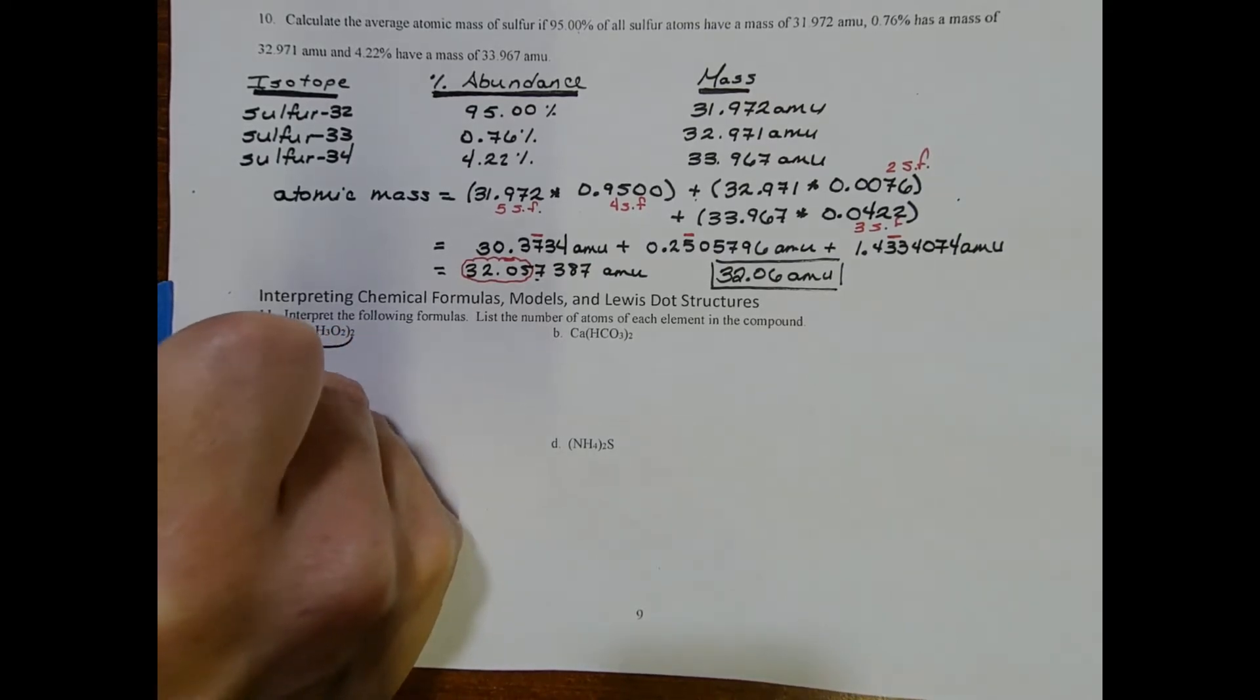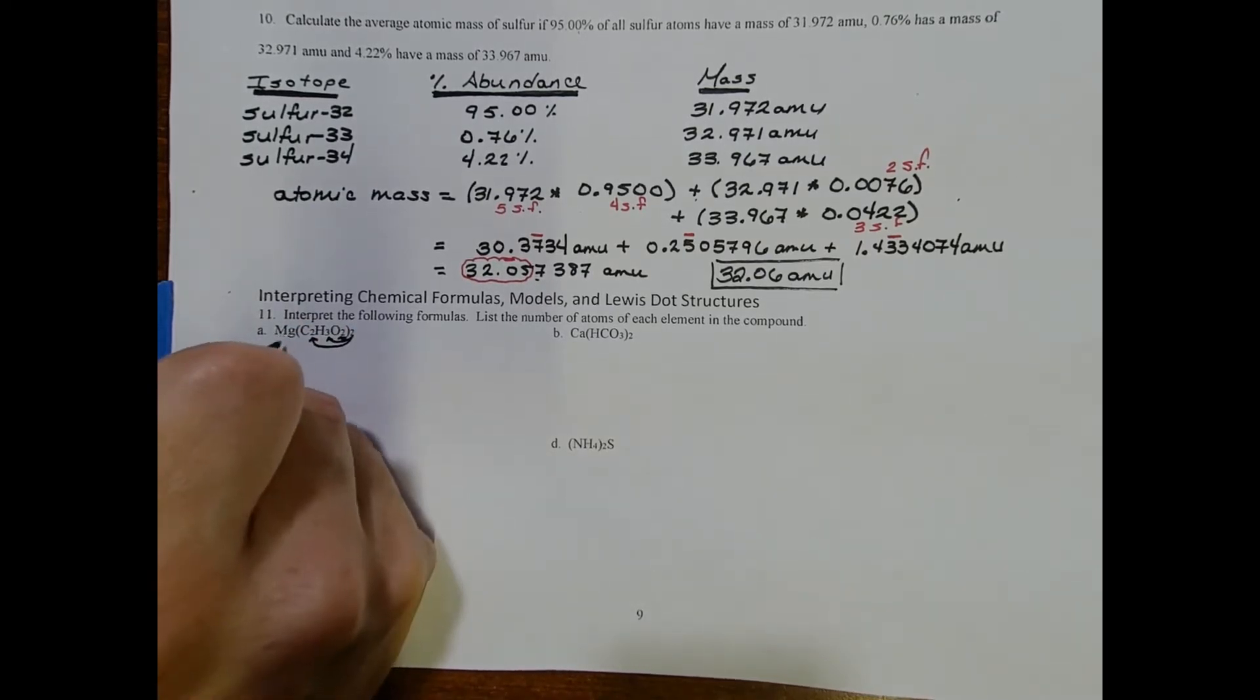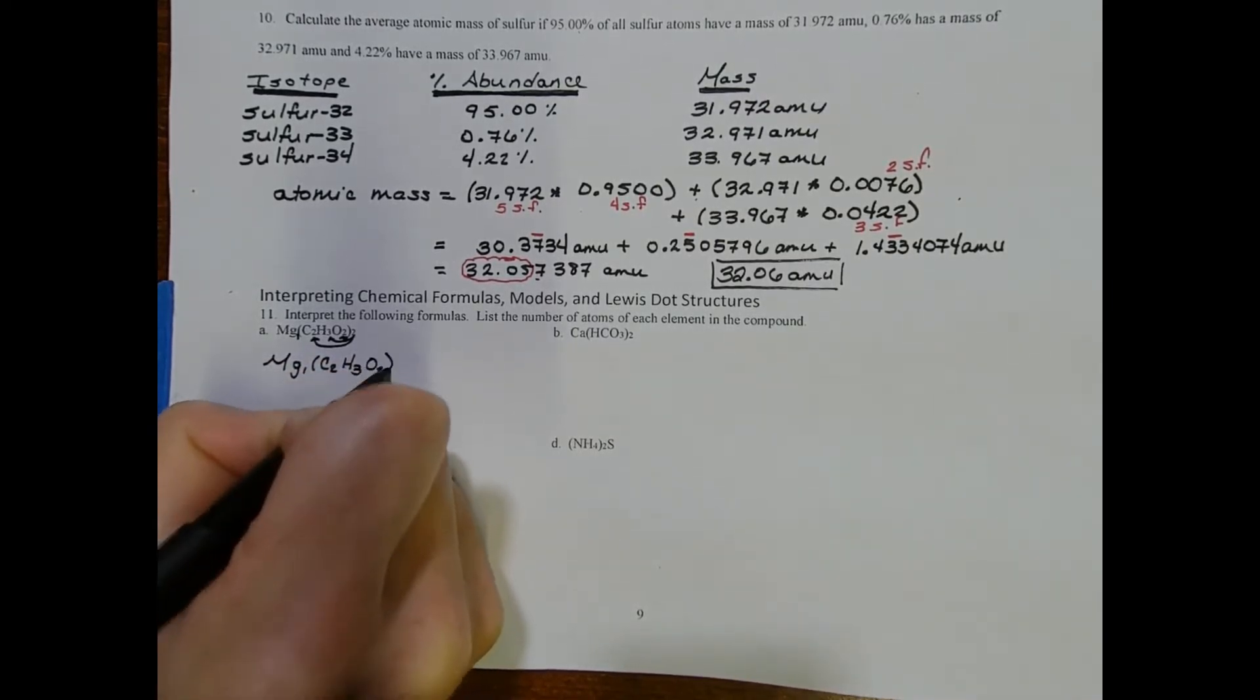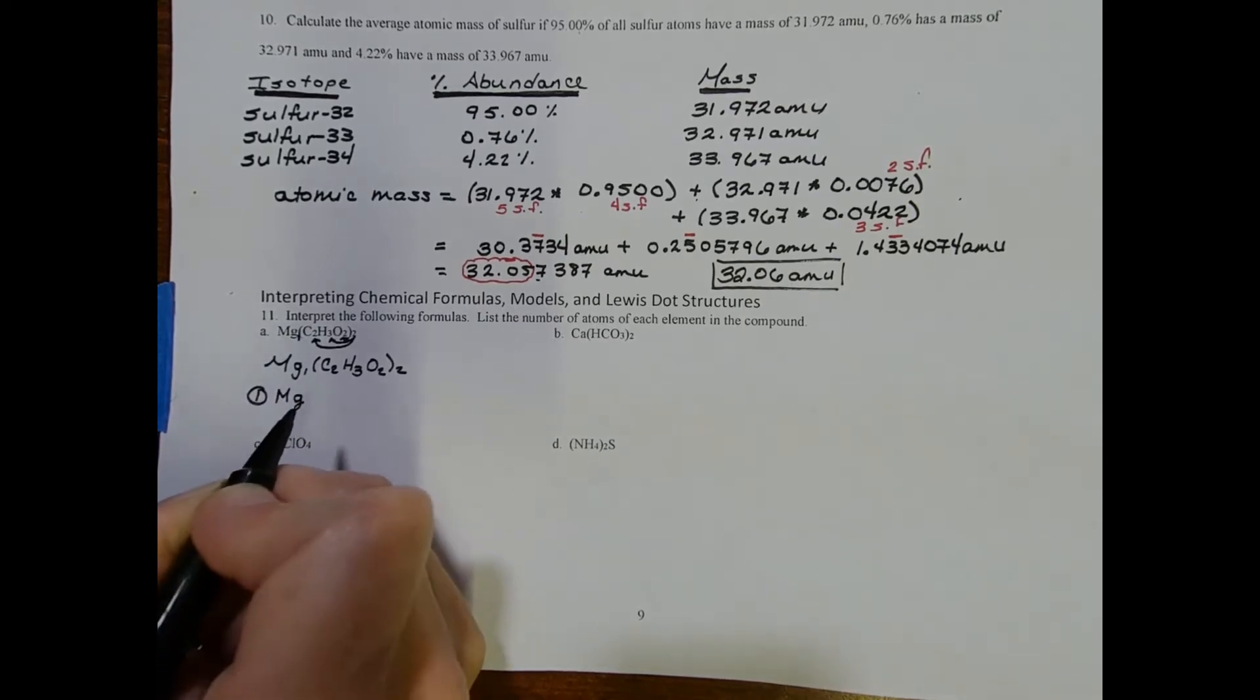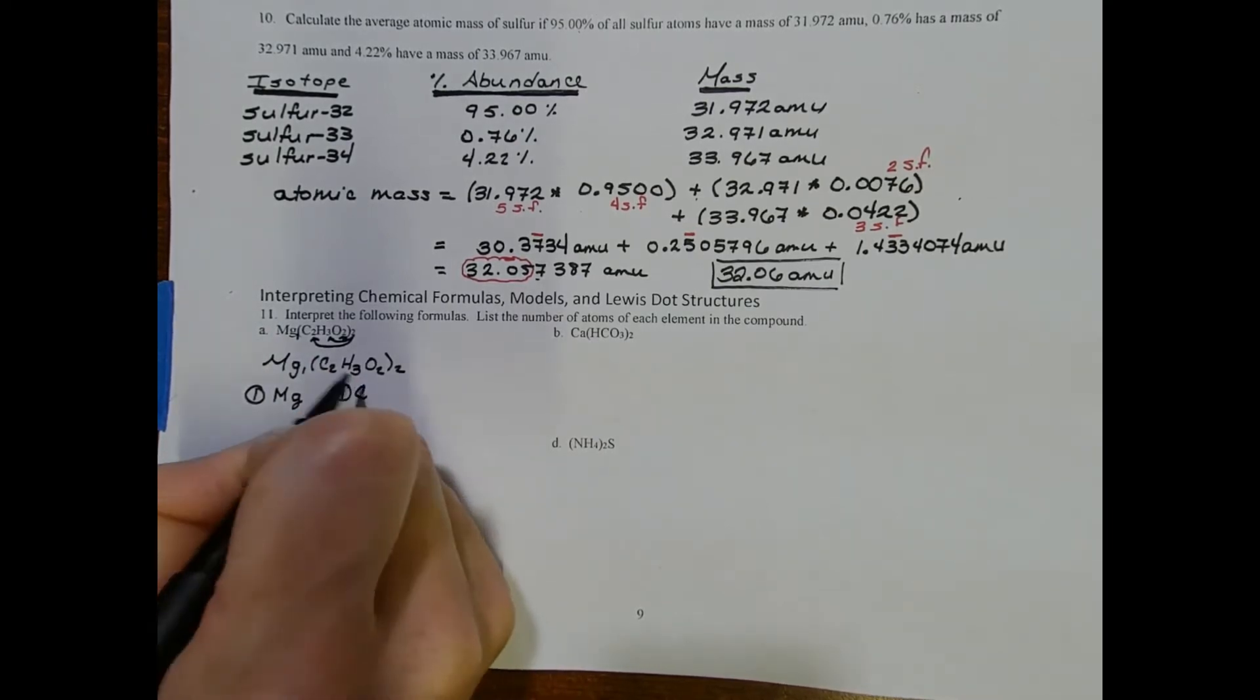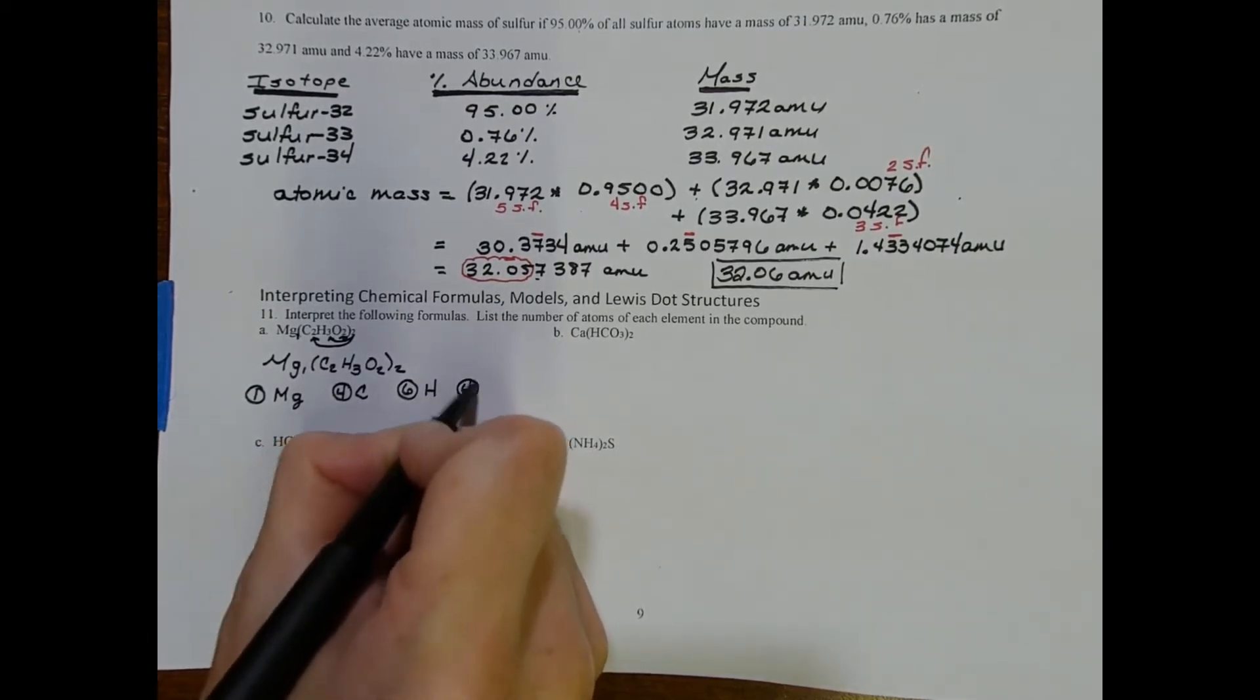So I'm going to distribute this to the carbon, to the hydrogen, and to the oxygen. The magnesium's outside of the parentheses, so the 2 doesn't impact the magnesium. There's a 1 next to the magnesium that's understood. So at the end of the day, I can say we're looking at a compound composed of 1 atom of magnesium, 4, 2 times 2, 4 atoms of carbon, 6 atoms of hydrogen, and 4 atoms of oxygen.